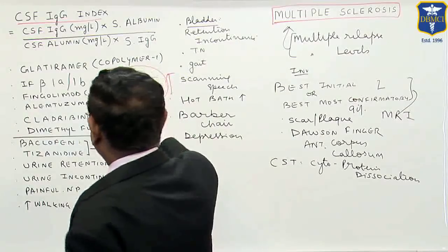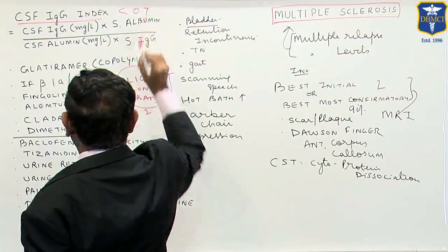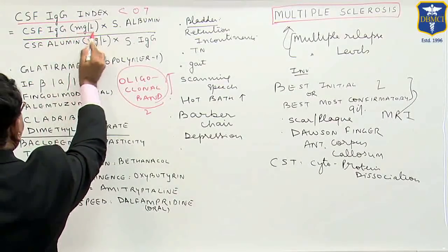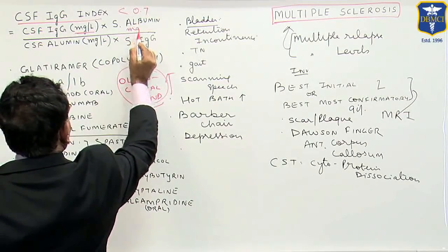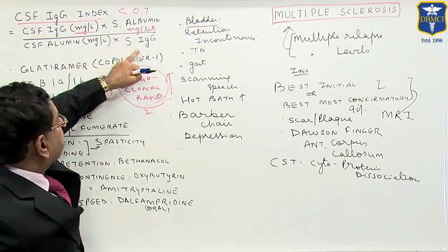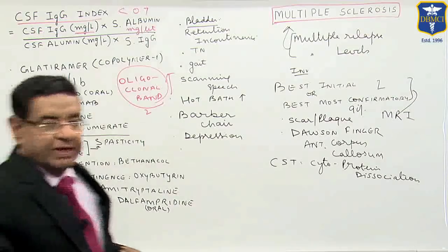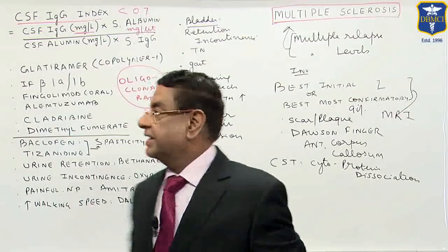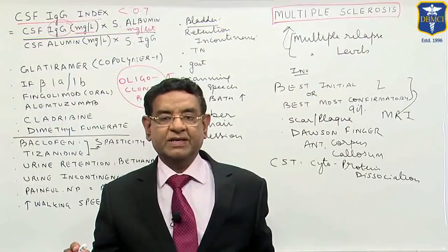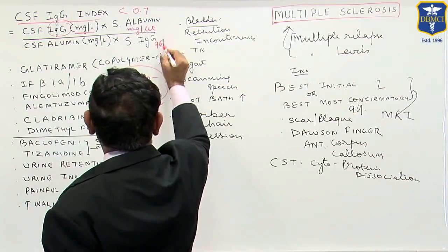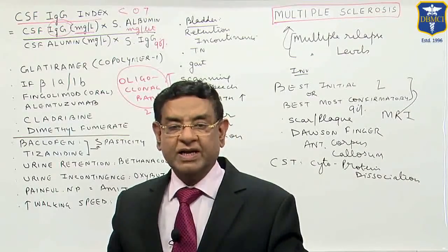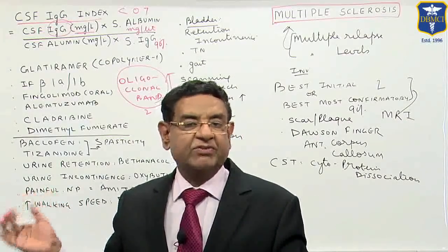The CSF IgG index is calculated as: CSF IgG (mg/L) × serum albumin (mg/L), divided by CSF albumin (mg/L) × serum IgG (mg/L). The normal value is less than 0.7. In multiple sclerosis, because IgG is being made in the CSF, this value goes much higher than 0.7. This test is positive in around 90 percent of cases and is especially useful when MRI is non-conclusive.